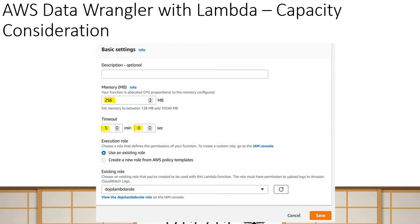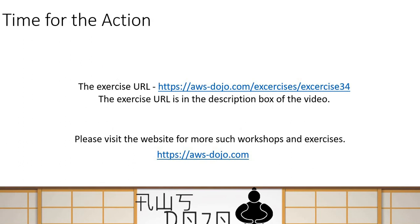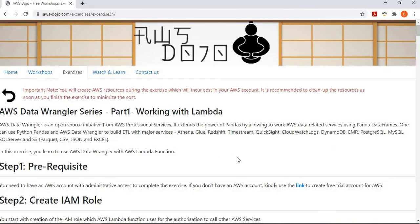So here's what we are going to build today: a pretty straightforward thing. We'll have an S3 bucket with some data. We'll use a Lambda function configured with Data Wrangler that reads data from the S3 bucket, does a little transformation, and writes back to the S3 bucket. We have created this exercise and published it to aws-dojo.com. I've provided the URL in the description box below. I'm going to walk you through the steps involved and after that you can run this exercise on your own to get hands-on experience.